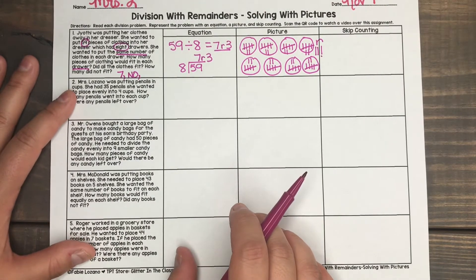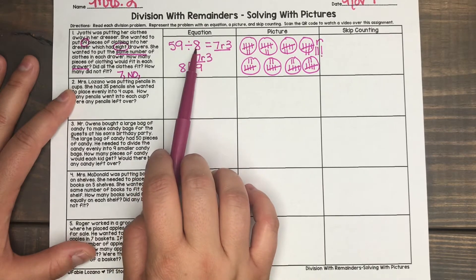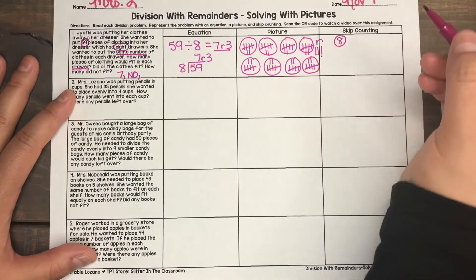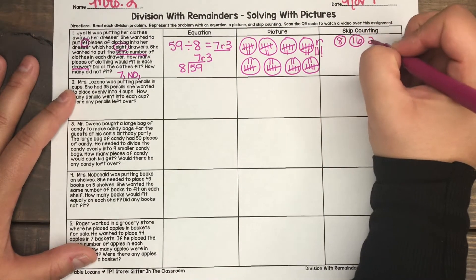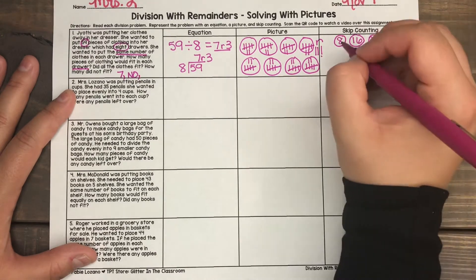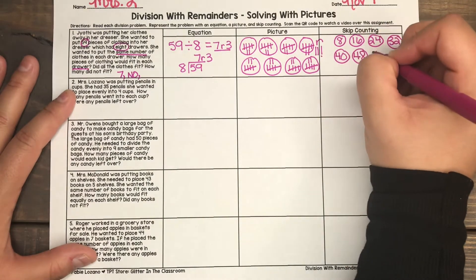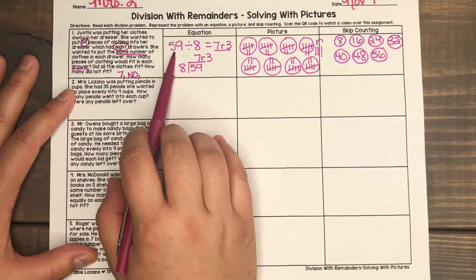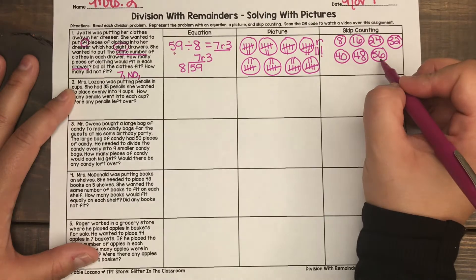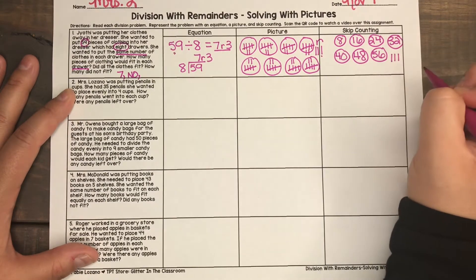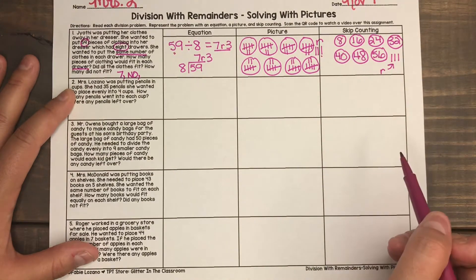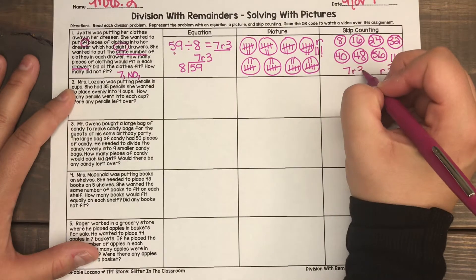Another way to solve this is to skip count. Look at your equation — eight is my divisor, so I'm making eight groups and I'm going to count by eight. I tell my students to skip count until you hit the number 59 before you pass it: 8, 16, 24, 32, 40, 48, 56. Stop right there — if I skip count one more time by eight, I'll write 64, and I cannot pass my dividend of 59. So at 56, I count by ones: 57, 58, 59 — here is my remainder. How many groups of eight did I get? One, two, three, four, five, six, seven groups of eight, and I have three left over. That matches my answer: seven remainder three.